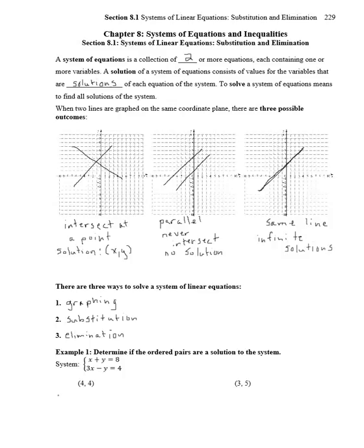First, let's determine if ordered pairs are a solution to the system. If our system is x plus y equals 8, 3x minus y equals 4, and we want to see if (4, 4) is a solution, we just plug them into each equation, the 4 and the 4 for x and y. We have 4 plus 4, that equals 8, so that solution checks.